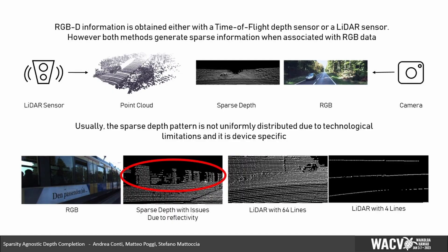To date, accurate depth perception is demanded either to multi-view imaging approaches or active sensors like LiDAR or time-of-flight ones. Both these sensors provide in output a sparse information. The former generates a point cloud that, once projected over the image plane, provides depth information only for few image coordinates. The latter usually leverages a sparse emitting pattern to limit power consumption, yielding meaningful depth measurements for only few points in the scene.